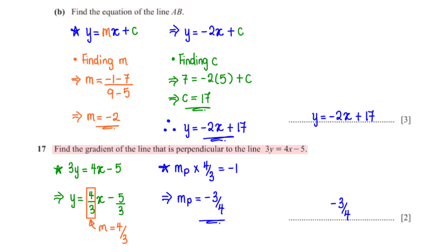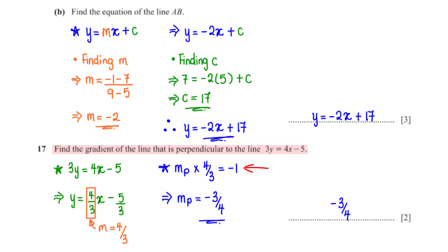Find the gradient of the line perpendicular to 3y equals 4x minus 5. Rewrite as y equals (4/3)x minus 5/3, so the gradient is 4 over 3. Since the product of perpendicular gradients equals −1, the gradient of the perpendicular line is negative 3 over 4.